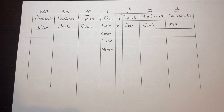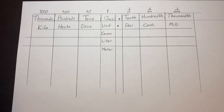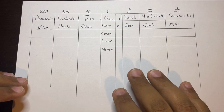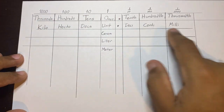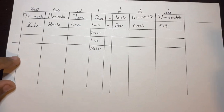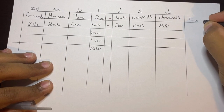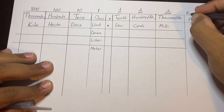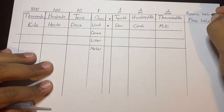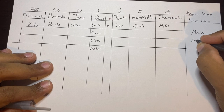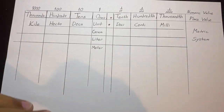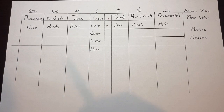Good evening parents. Mr. Vigoro here of the Good Teacher Videos. I'm making this video to show students and their parents about the metric system. The metric system is just another form of measuring items, whether it be for length, weight, or volume. I have a simple chart here that I'm going to fill in as we go along. At the very top I have the place value, above that the numeric value, and in the larger area the metric values.